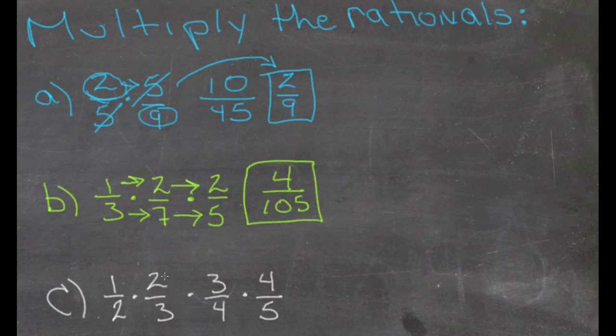We're going to look and see what can cancel. We have a 2 and a 2, we have a 3 and a 3, we have a 4 and a 4. Wow, that makes things a lot easier.